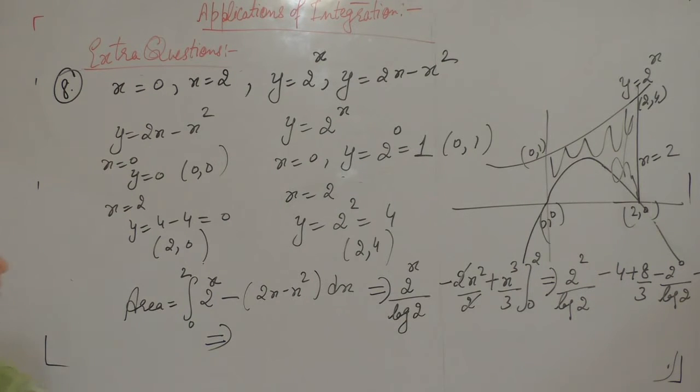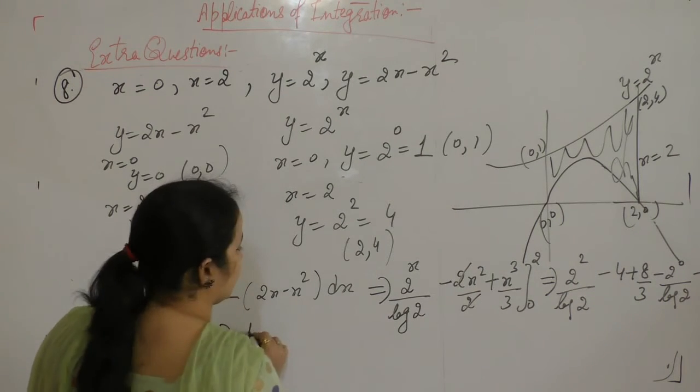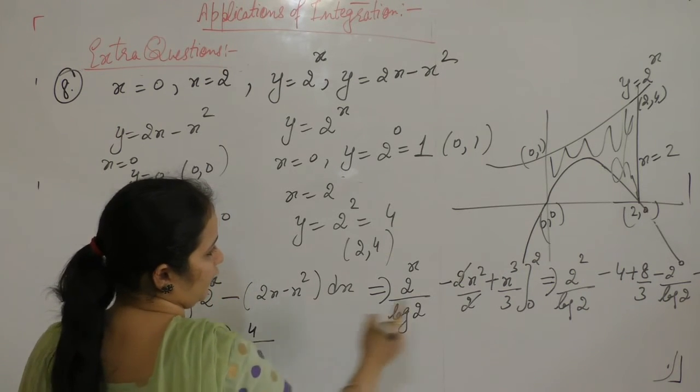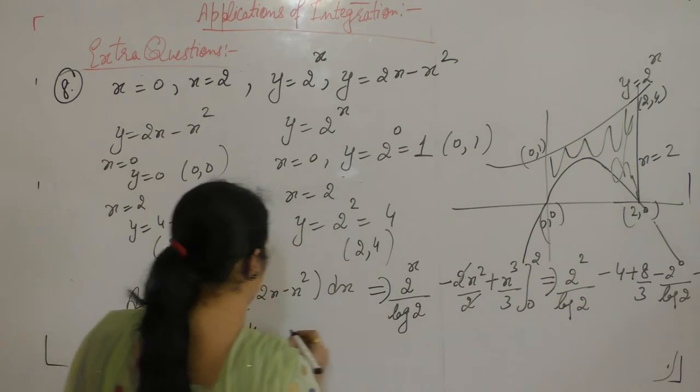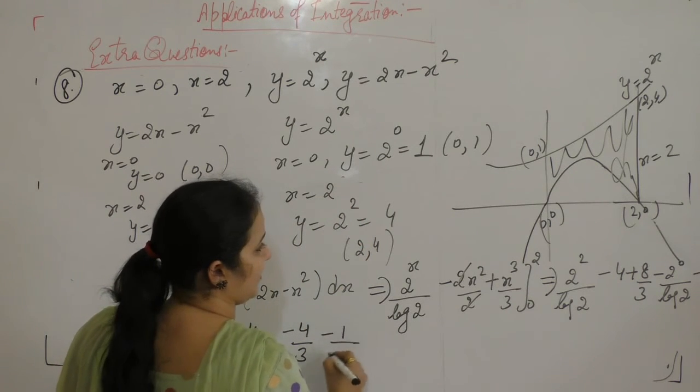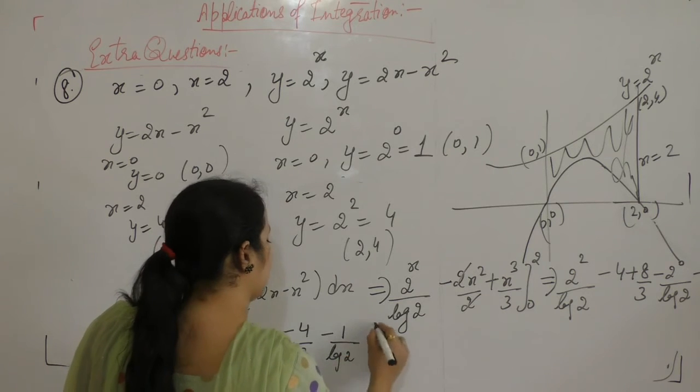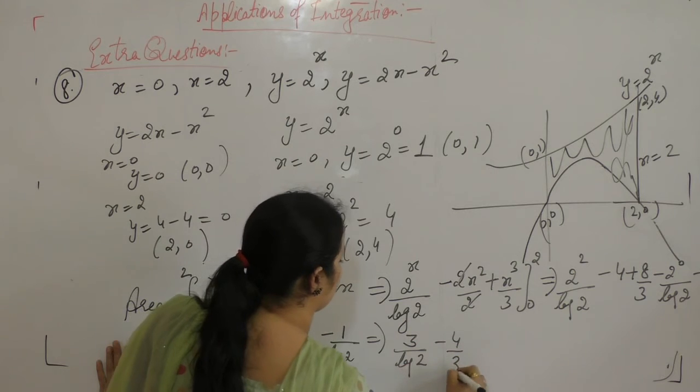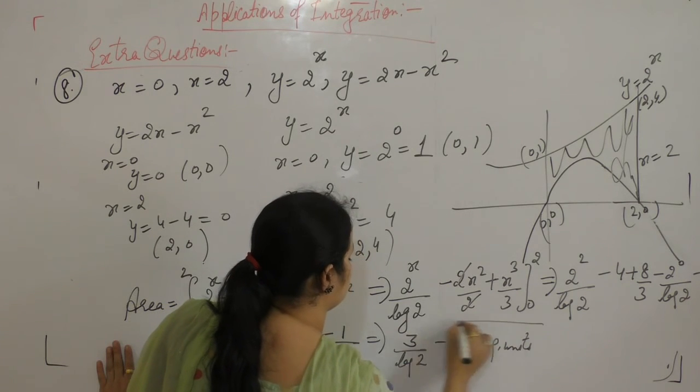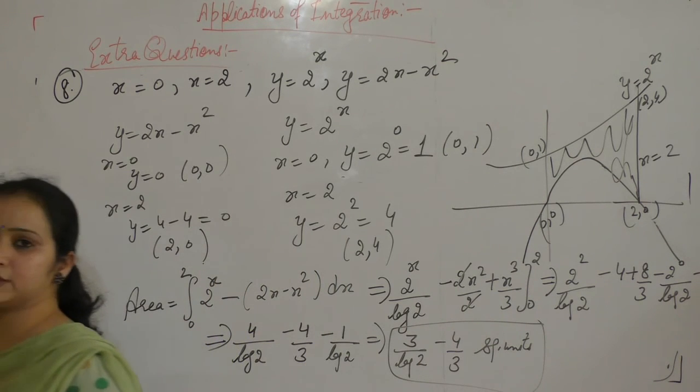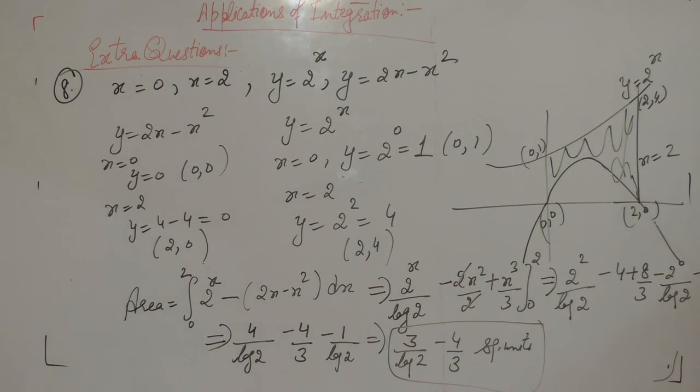Now solve this. 2² is 4 upon log 2. 4 times 3 is 12 minus 12 plus 8 minus 4 by 3. Something power 0 is 1, now 4 minus 1 is 3 upon log 2 minus 4 by 3 square units. 3 upon log 2 minus 4 by 3 square units.